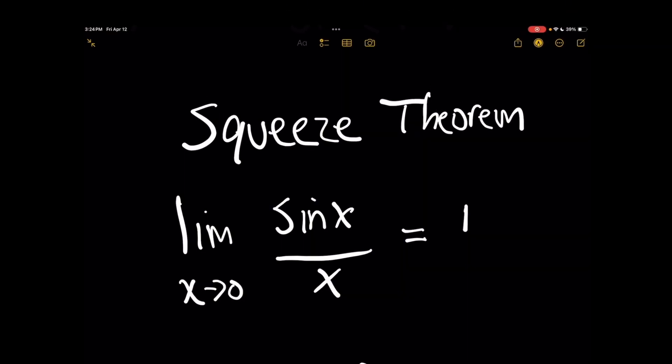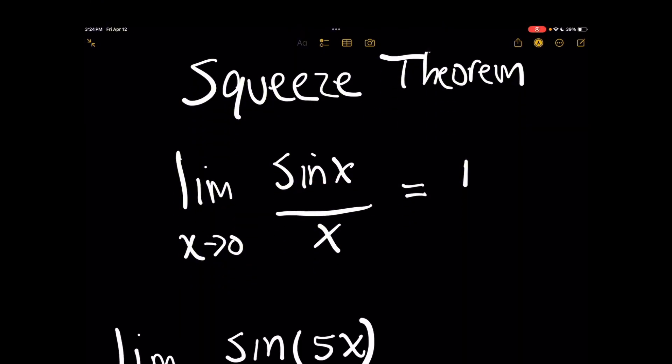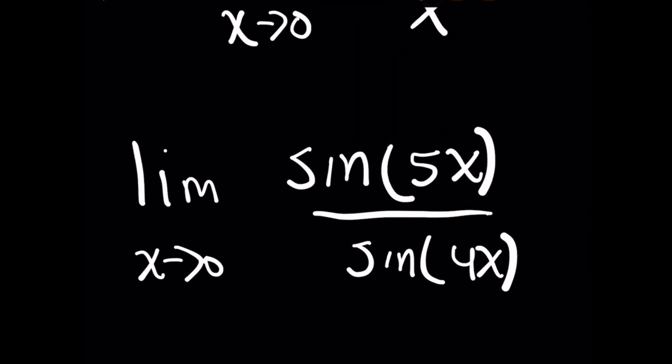Before we can actually just plug things in and quickly solve it, there's a dilemma. Because with the squeeze theorem here, you have a constant of 1 in front of x, both on the numerator and the denominator. But for the limit I gave you, you've got a 5 on top and a 4 on bottom.